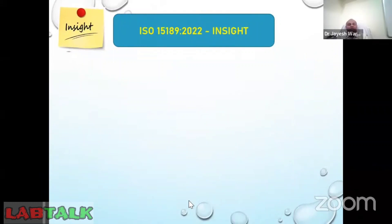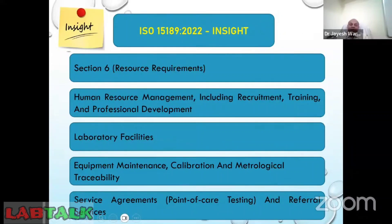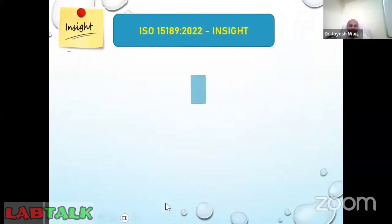Clause six covers resources, which includes human resources such as recruitment, training, and professional development; laboratory facilities and infrastructure; equipment, calibration, and metrological traceability; and resources relating to service agreements for point-of-care testing and reference services. Since point-of-care testing is now included in this standard, there are specific resource requirements for those facilities as well.